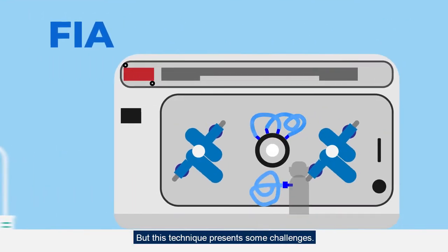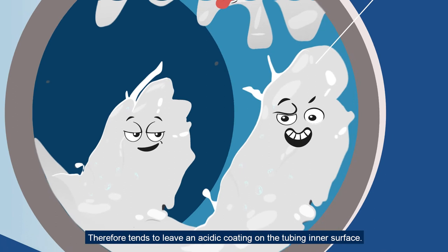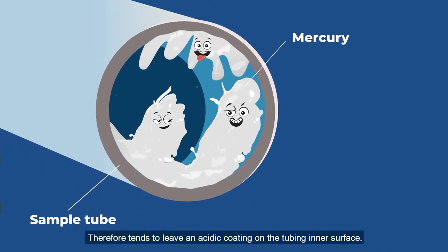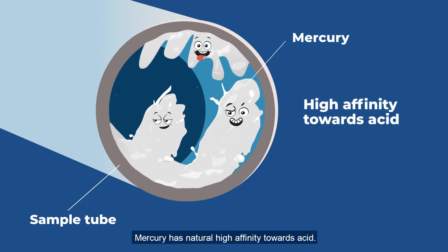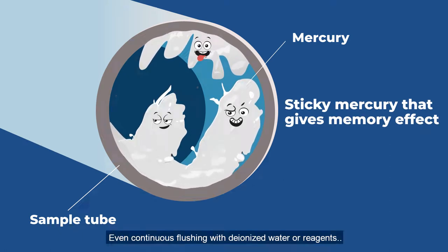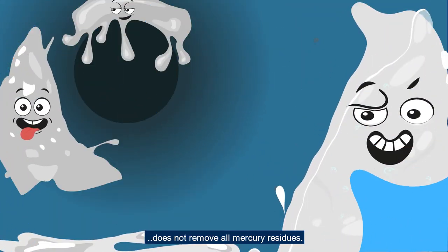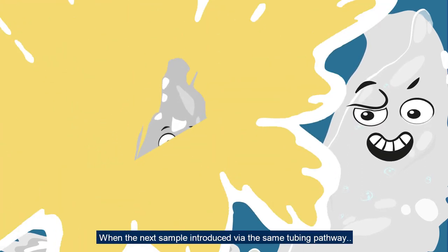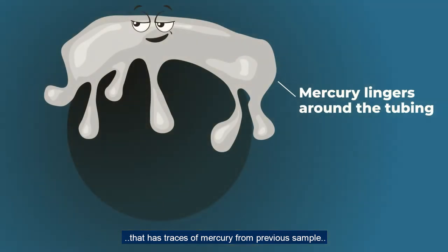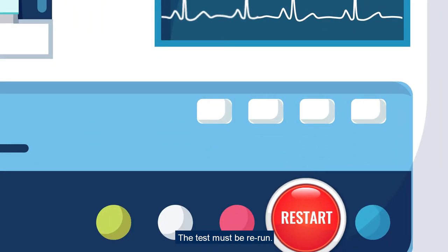But this technique presents some challenges. The pre-chemically digested sample is acidic, therefore tends to leave an acidic coating on the tubing inner surface. Mercury has a natural high affinity towards acid, thus dissolves and retains its residue as it passes along the tubing. This phenomenon is called memory effect. Even continuous flushing with deionized water or reagents does not remove all mercury residues. When the next sample is introduced via the same tubing pathway that has traces of mercury from a previous sample, it leads to a false high bias value, and the test must be rerun.